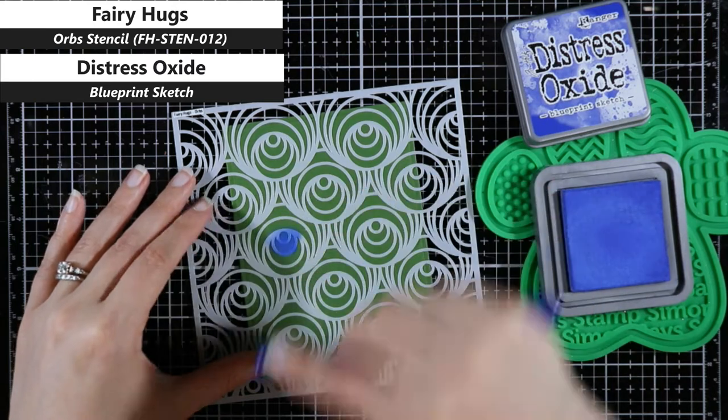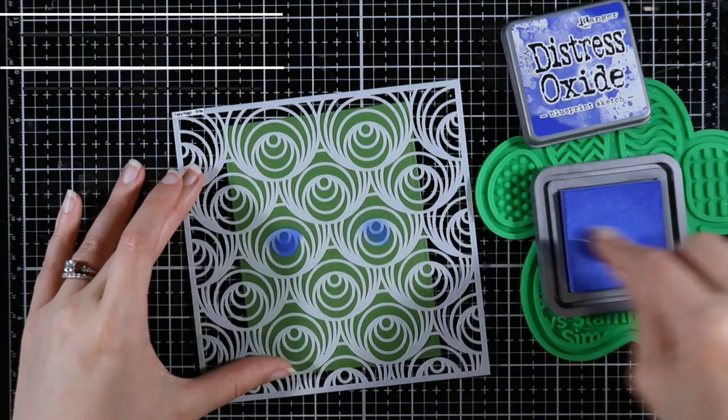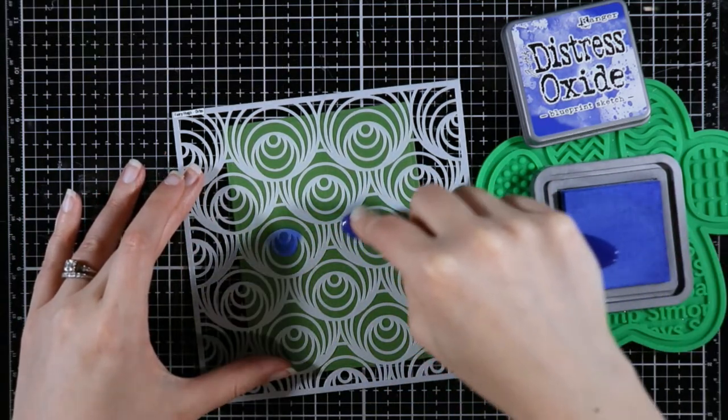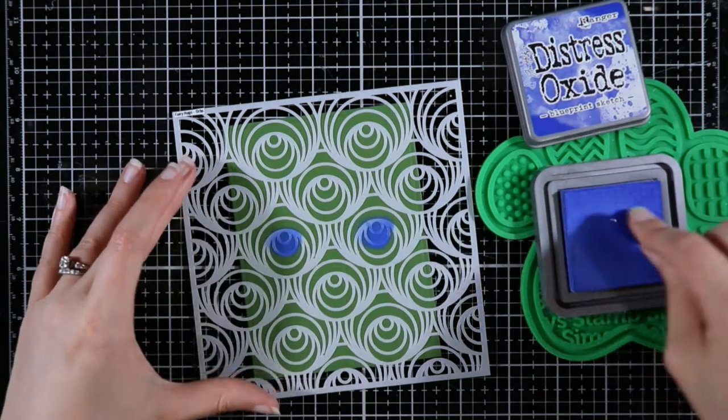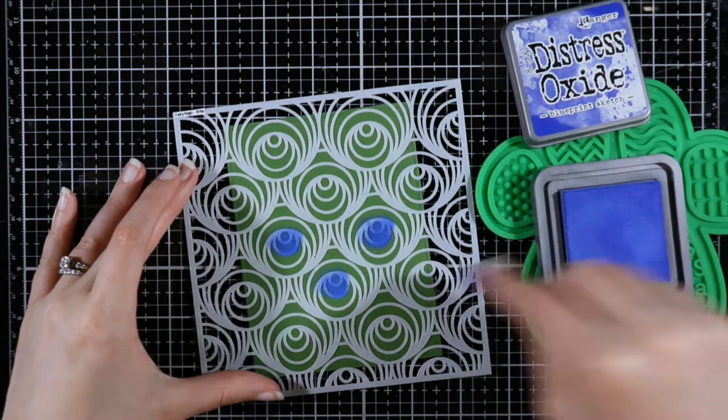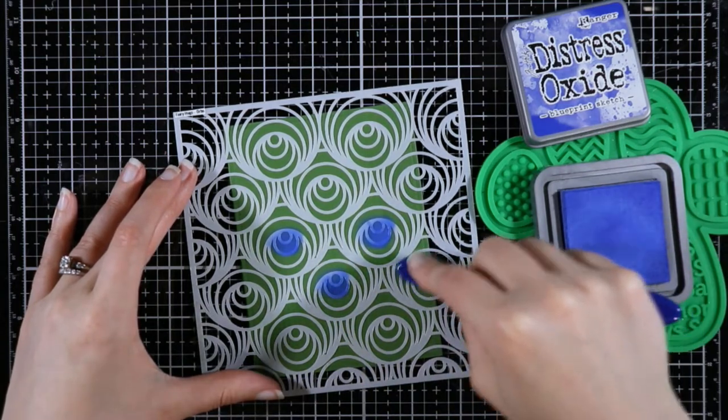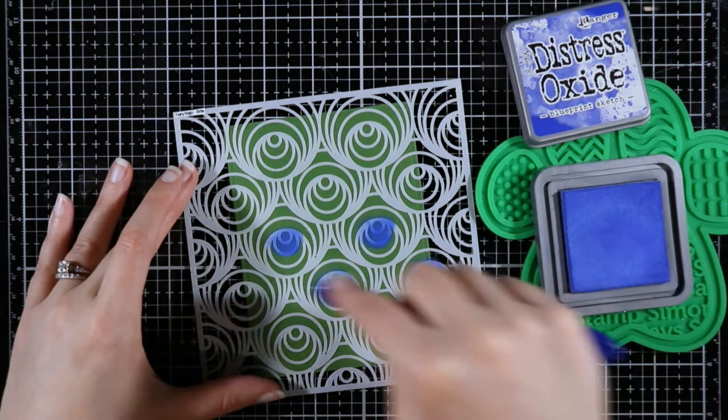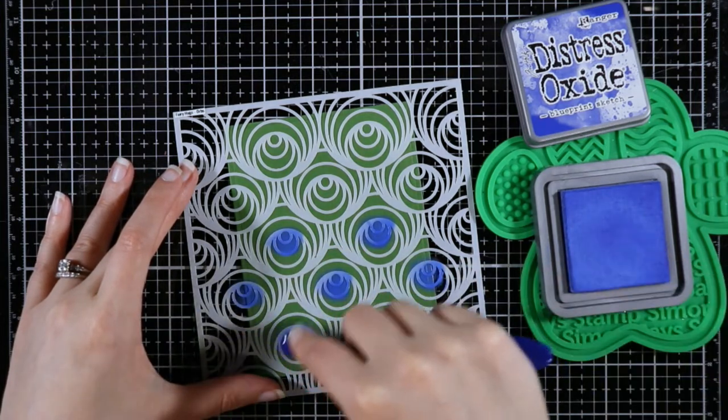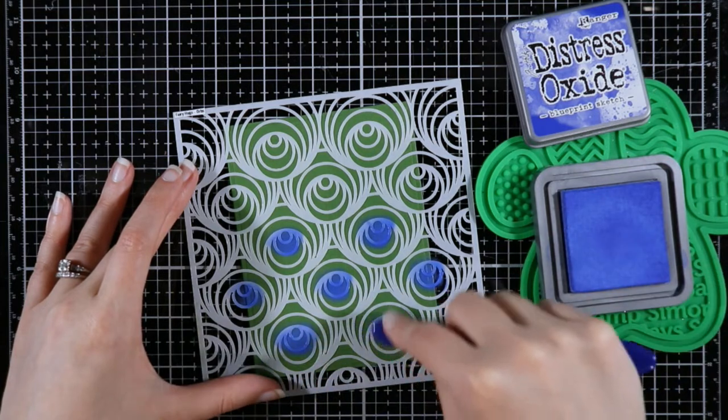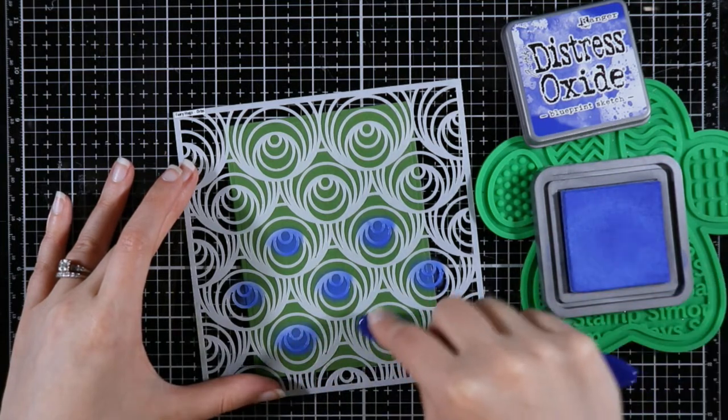I started off with Blueprint Sketch Distress Oxide and I'm just filling in the little centers of the orbs, or as I'm going to use them, as peacock feathers. I'm just using a small blending brush. These are very helpful for a little detail stenciling.